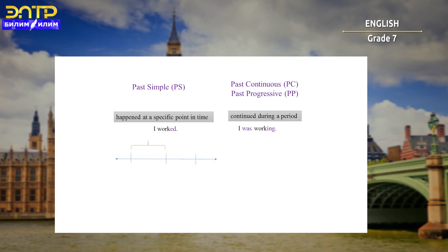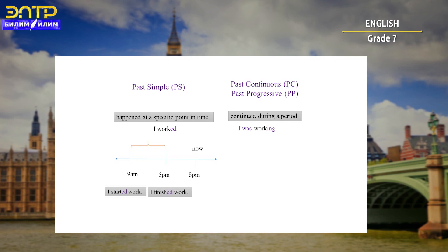Now let's look at this timeline. For example, let's imagine it is now 8pm in the evening. We want to say about an action that happened in the past — for example, 9am, which means 9 o'clock in the morning. I started work at 9am, and 5pm — 5 o'clock in the afternoon — I finished work. In between, between 9am and 5pm, I was working. And this is the past continuous.